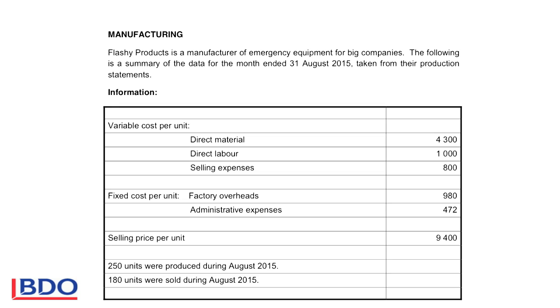The selling price per unit is what you will sell it for. Then they give us the number of units that was produced during August and how many units were sold.